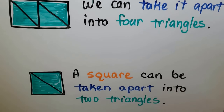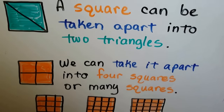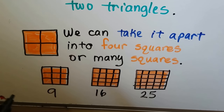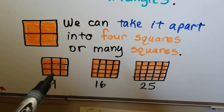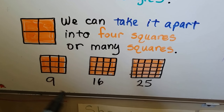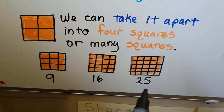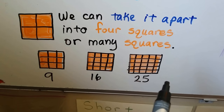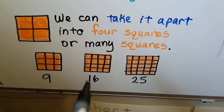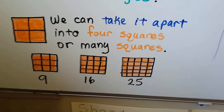A square can be taken apart into two triangles, and we can take it apart into four squares or many squares. If we draw more lines inside and make them all the same size, we can have nine squares, 16 squares, 25 squares, and if we draw even more lines, we could have 36, 49, and 64 squares — all kinds of tiny little squares inside that are all the same size.